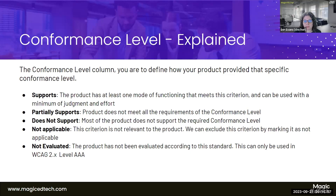'Not Applicable' covers criteria irrelevant to a product — for example, if a product doesn't include video, all WCAG criteria related to video requirements would be marked not applicable. 'Not Evaluated' is only used when you choose not to evaluate criteria, typically for WCAG Level AAA.